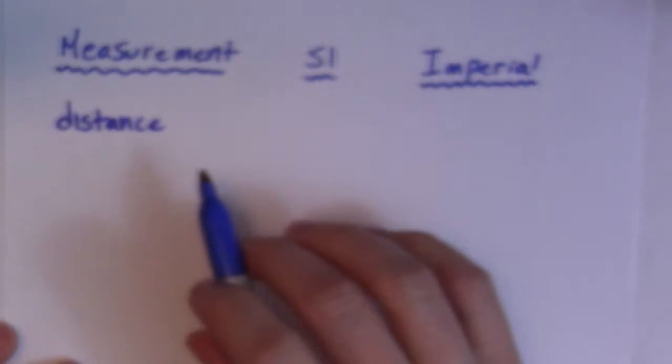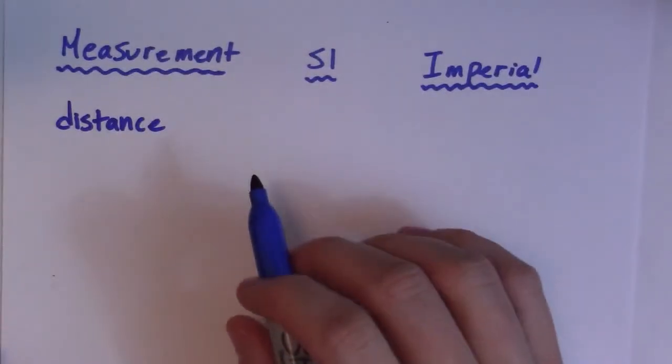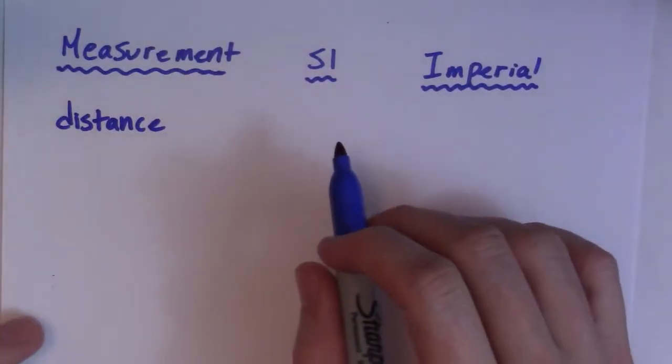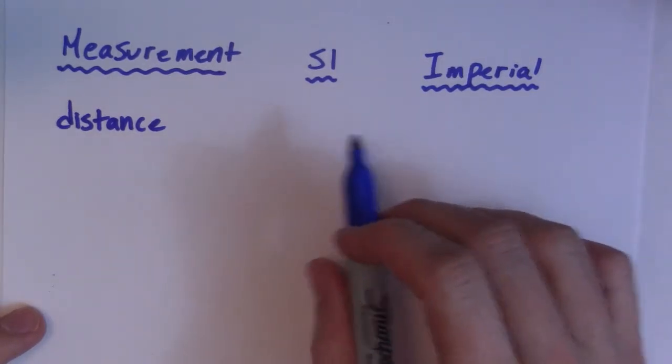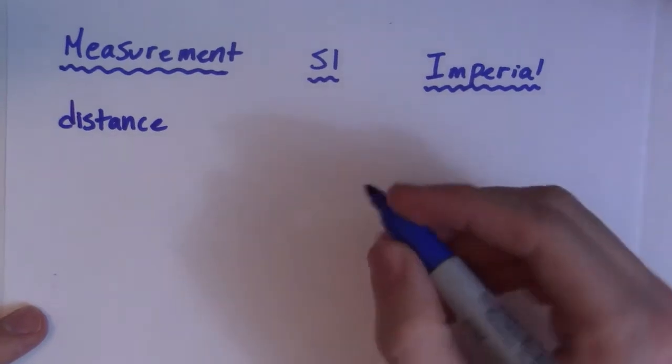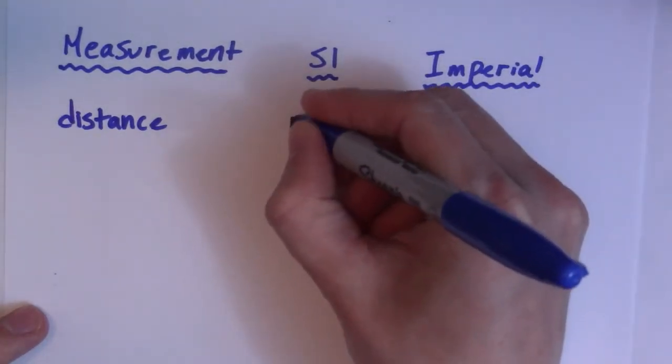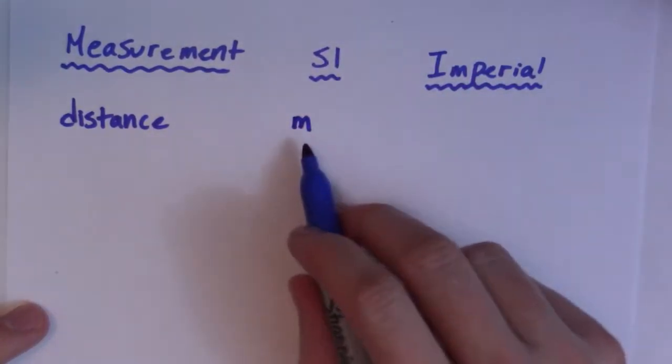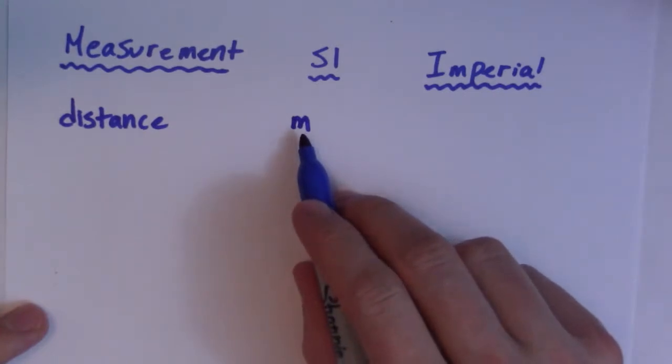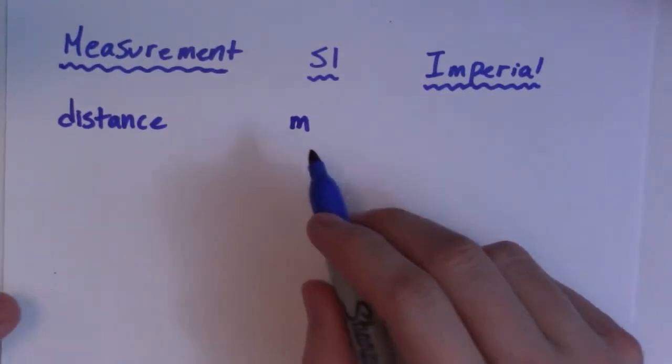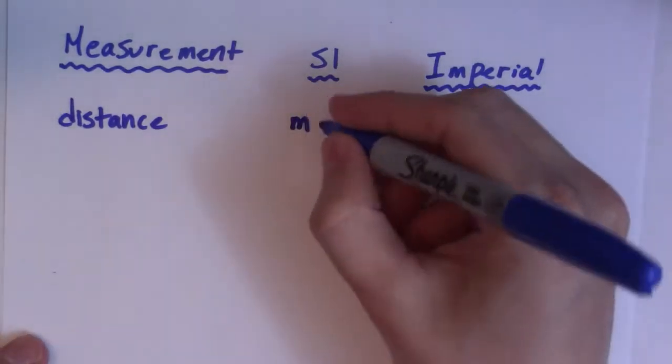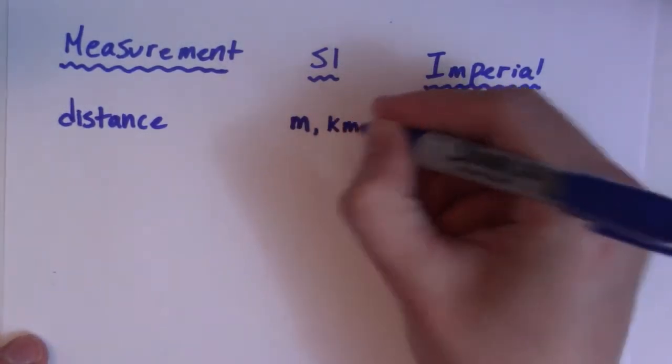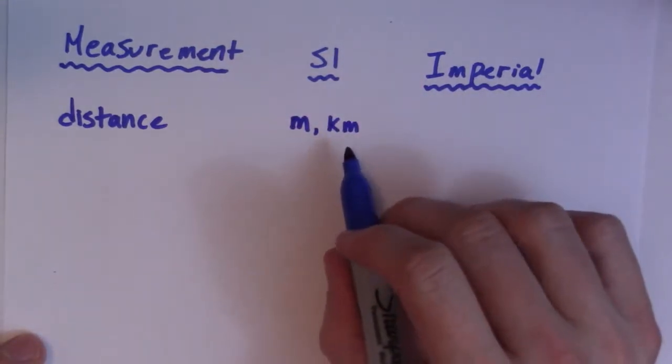Distance is how far or how long something is. There are multiple units for this in Imperial and SI. In SI, the base unit is meters. Everything is in terms of meters. So the meter is the base unit, and everything is a power of 10 of that. So a kilometer is 1,000 meters. That's another way of measuring distance.